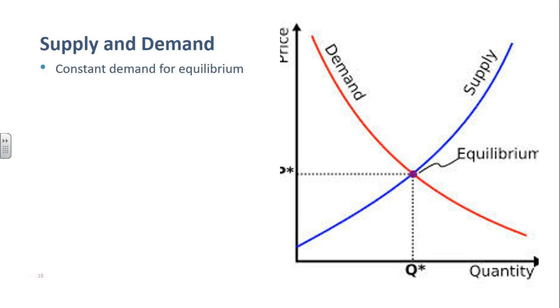The important thing to understand is that the economy, the market, is in a constant demand for equilibrium. Equilibrium is simply the fancy word for saying an equal balance between the demand for a good and the supply for a good.